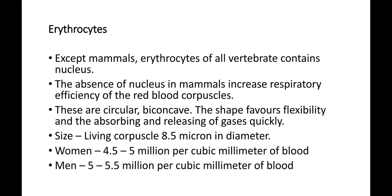Pehle hum padenge Erythrocytes ke baare mein. Ye shape mein biconcave hote hain aur mammals ke alawa baaki sabhi vertebrates ki red cells nucleated hoti hain. Erythrocytes ka diameter 8.5 micron aur thickness 2.2 micron tak hoti hai. Female mein inki sankhya 4.5 se 5 million tak hoti hai jabki males mein 5 se 5.5 million tak. Single corpuscle ka color light yellow hota hai.